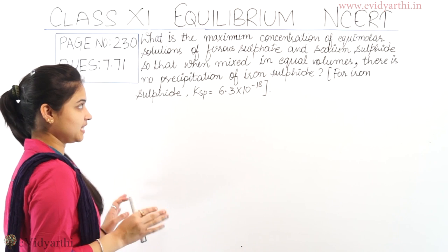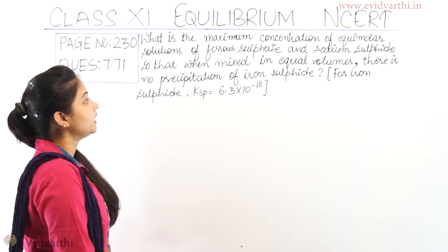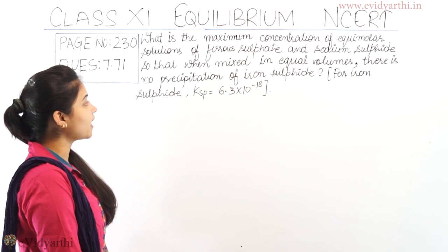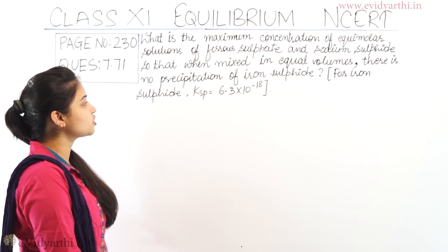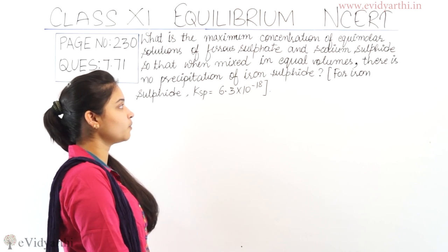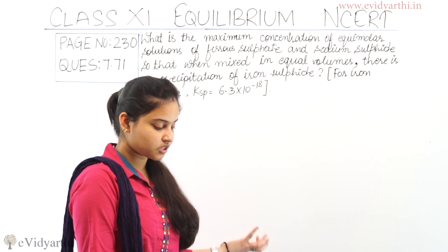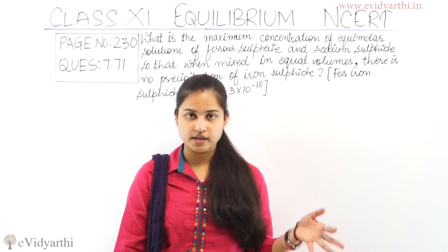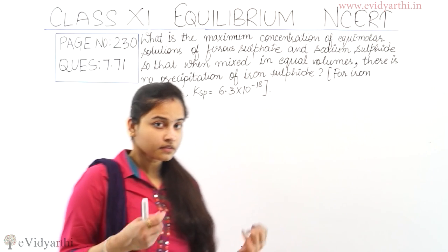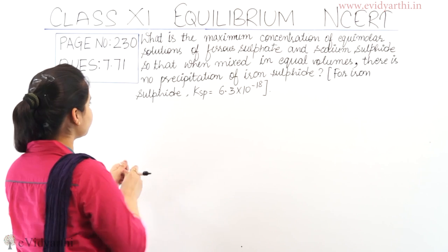The question says: what is the maximum concentration of equimolar solutions of ferrous sulfate (FeSO₄) and sodium sulfide (Na₂S) so that when mixed in equal volumes there is no precipitation of iron sulfide? For iron sulfide, the solubility product constant Ksp equals 6.3 × 10⁻¹⁸. We have to find how much maximum concentration of FeSO₄ and Na₂S so that when mixed in equimolar amounts there is no precipitation of iron sulfide.